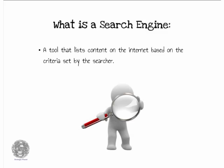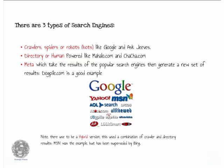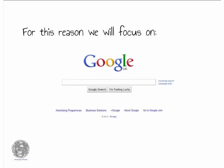The first question we should ask ourselves is: what is a search engine? It's a tool that lists content on the internet based on the criteria set by the searcher. There are three types. There's the crawlers or spiders, which is like Google. Then there's the directory or human-powered search engines like Mahalo and ChaCha.com. And finally there's the meta search engines, which take the results of popular search engines and generate a new set of results. Dogpile is a good example here.